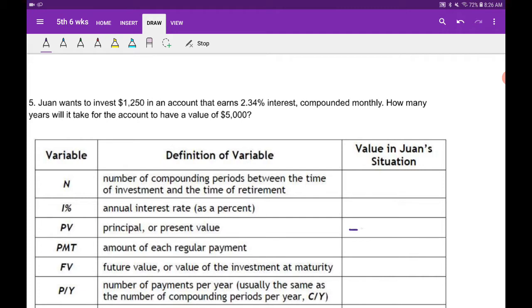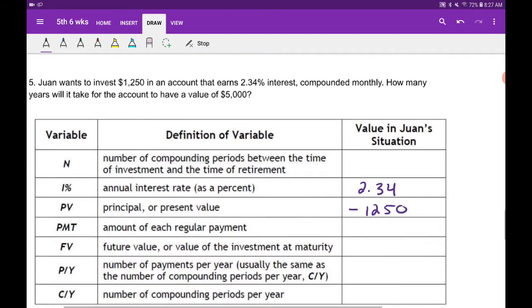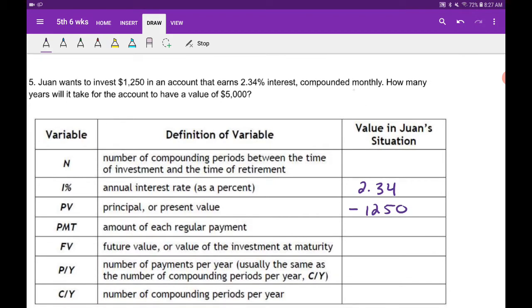That's going to be a negative $1,250. We have 2.34% interest, so 2.34 right here. It's going to be compounded monthly, which means that's 12 here, so N equals 12.